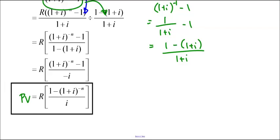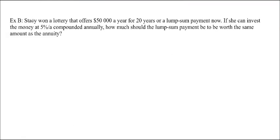Now we're going to use this formula. We're going to do a couple of questions. Stacy won a lottery that offers $50,000 a year for 20 years or a lump sum payment right now. If she can invest the money at 5% per annum compounded annually, how much should the lump sum payment be to be worth the same amount as the annuity?